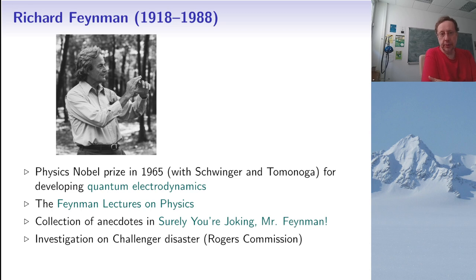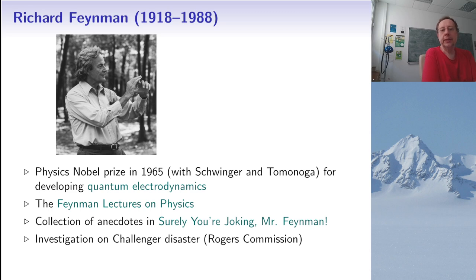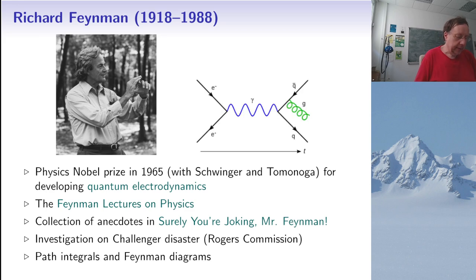He obtained the Physics Nobel Prize in 1964 together with Schwinger and Tomonaga for developing quantum electrodynamics. He's also known for his lectures on physics, published in book form and available on YouTube, as well as collections of anecdotes like 'Surely You're Joking, Mr. Feynman,' and he was part of the Rogers Commission investigating the Challenger disaster.